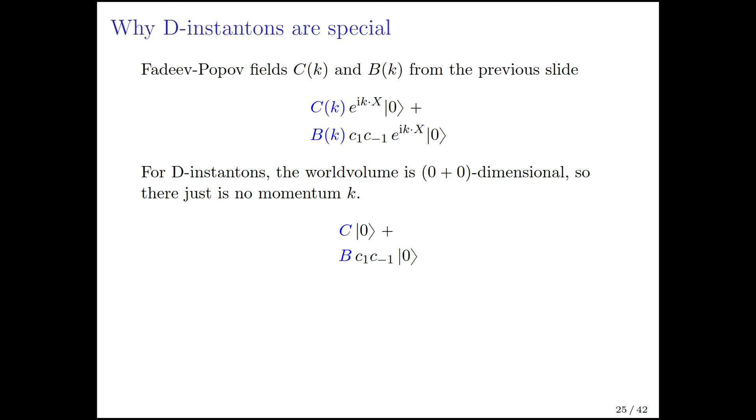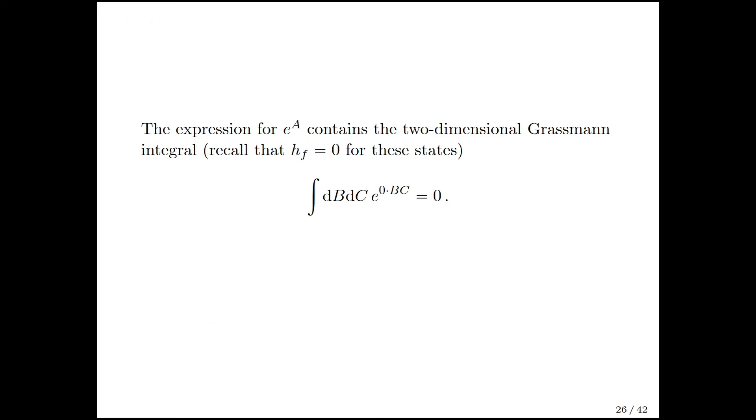For D-instantons, the worldvolume is 0 plus 0 dimensional, so there is no momentum. The only thing you have are two discrete states: capital C multiplying the 0 and capital B multiplying c1, c minus 1, 0. Recall that this trace in the open string Hilbert space had this negative 2 there, and what I'm telling you now is this minus 2 is essentially coming from capital C and capital B. We've identified the fields that are leading to this problem of the minus 2. This expression for e to the A contains this path integral of e to the 0 times bc, and that's 0.